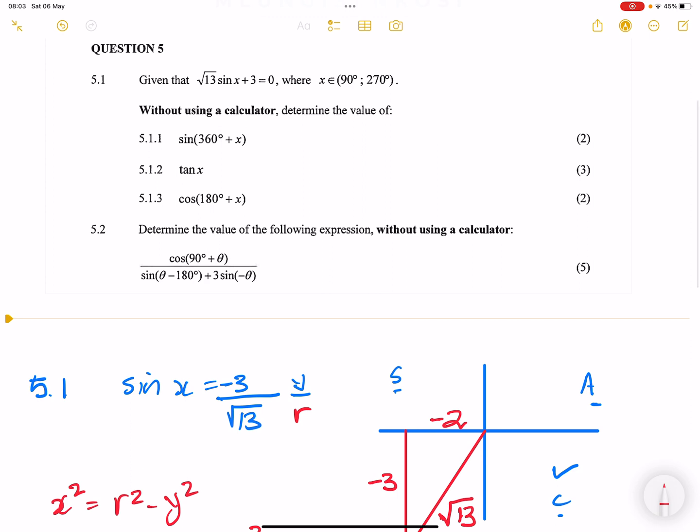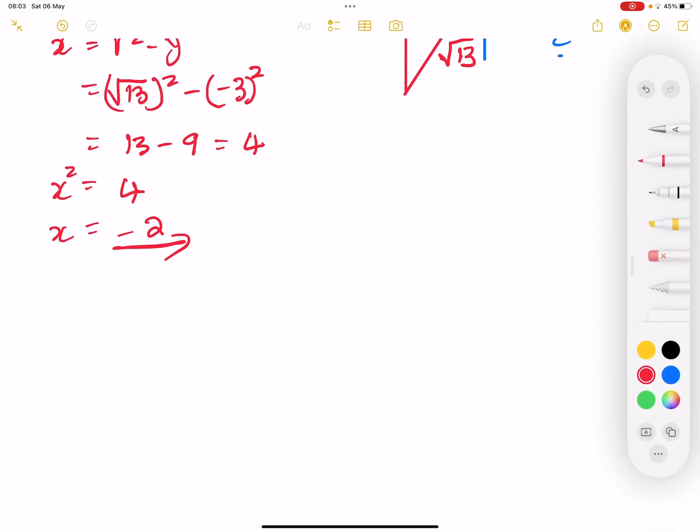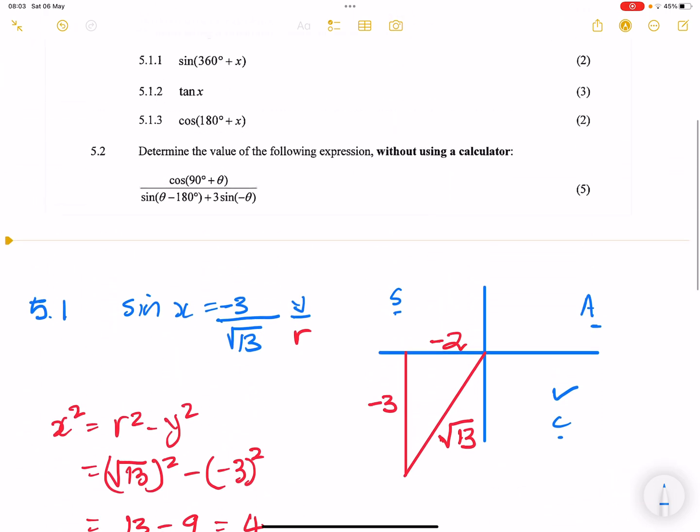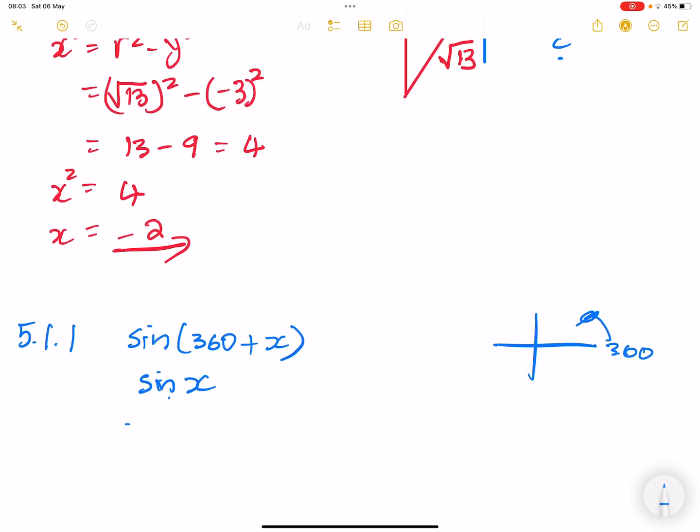Now they say to us, without using a calculator, determine sin(360° + x). So we're looking at 5.1.1, sin(360° + x). Please remember, we're going to use a reduction formula here. Whenever you've got something greater than 360°, if you've got anything greater than 360°, you can just subtract 360°. So this would be the same as sin(x) in the first quadrant. Sin(x) we already have, so that's going to be equal to -3/√13.